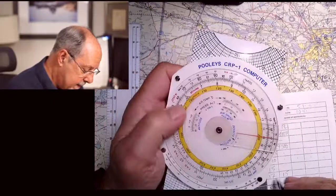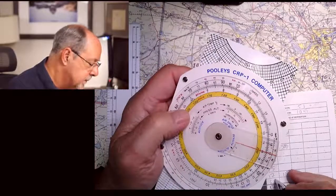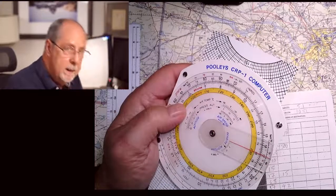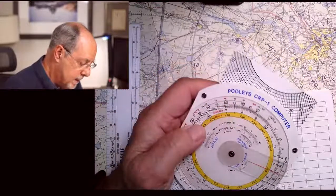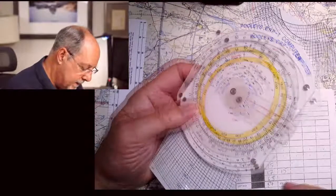So my ground speed now is actually 68. So how long is it going to take me to do 57 miles? Well, that's pretty easy. 57 is going to take me 50 minutes.